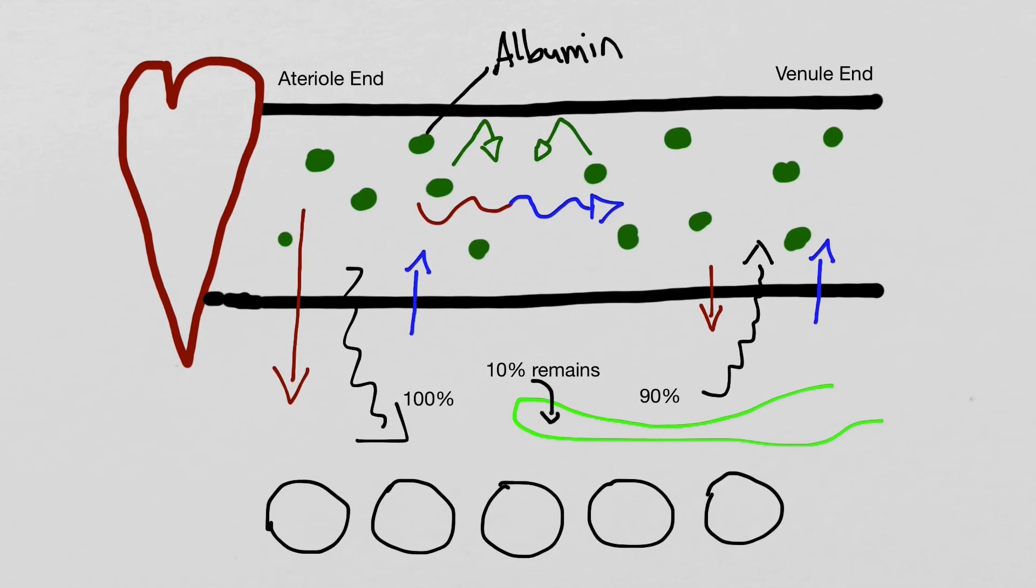Now, if a person has hypertension or high blood pressure, their capillary hydrostatic pressure will increase. This will cause more fluid to be filtered out and less fluid to be reabsorbed. The result would be increased fluid in the interstitial fluid, causing edema.